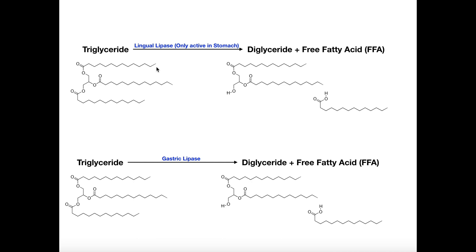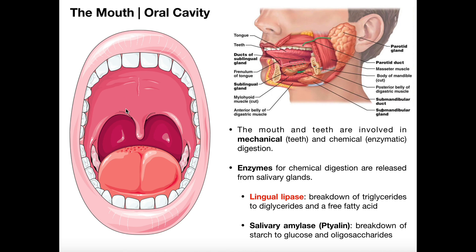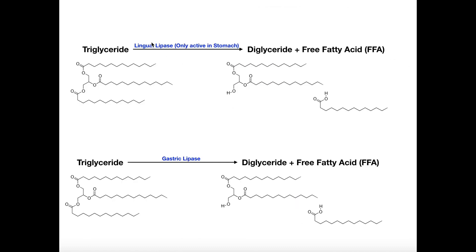In the oral cavity video, I mentioned that there were glands called intrinsic salivary glands, which are part of the mucosal lining of the oral cavity, and they secrete saliva. Within that saliva, there is an enzyme called lingual lipase. Lingual lipase was not active in the mouth because it requires a low pH to become activated. Therefore, once lingual lipase gets to the stomach, it becomes active, and it has the exact same function as gastric lipase — breaking down triglycerides into free fatty acids.